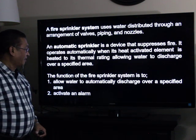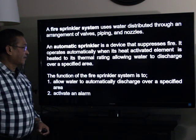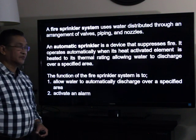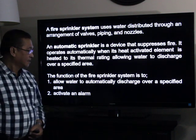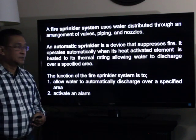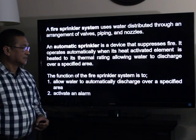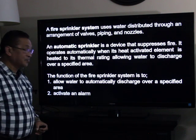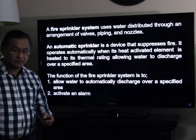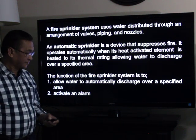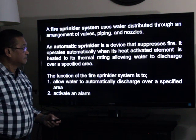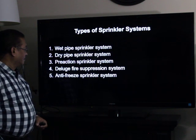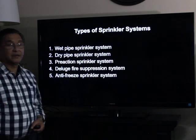The function of the fire sprinkler system is: number one, to allow water to automatically discharge over a specific area; and second, to activate an alarm. There are five types of fire sprinkler systems.